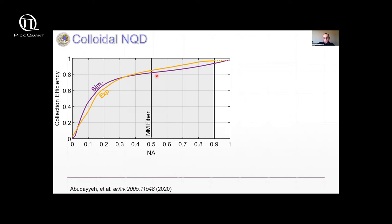So the orange is the experimental curve. The purple is what we expect from simulations. And you can see we get very high collection efficiencies. For example, at an NA of 0.5, you get a collection efficiency of over 80%, which is quite high.